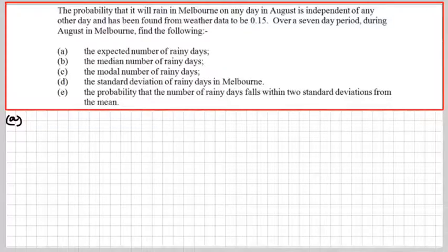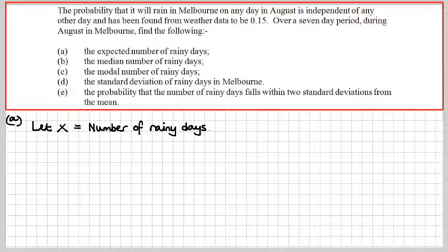The expected number of rainy days. For a binomial distribution, there is a nice convenient formula for the expected number. If we let X equal the number of rainy days, that grounds me and helps me think about what I'm doing. We know that X follows, watch this terminology, X follows a binomial distribution. This first number in the bracket is N and the second number is P.